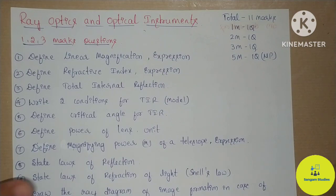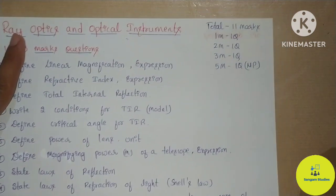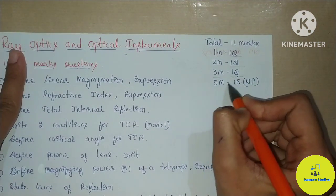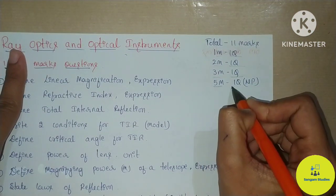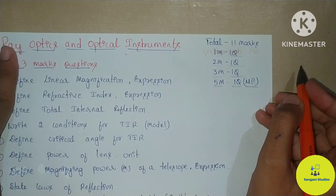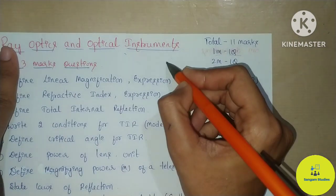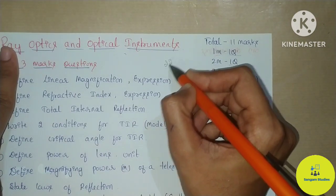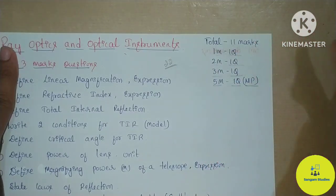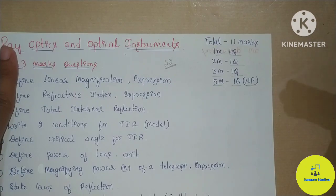Total marks: 11 marks in our final examination. One 1-mark question, one 2-mark question, one 3-mark question, one 5-mark question — that is a numerical problem. From a mid-term examination point of view, 11 marks doubled is 22 marks. Exact 22 marks — this depends on your district. Plus or minus 4 to 5 marks, it all depends on your district.